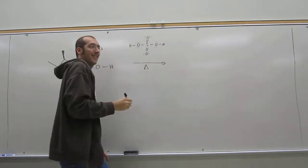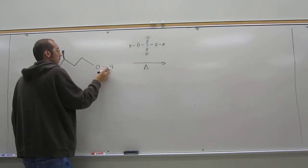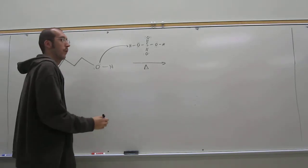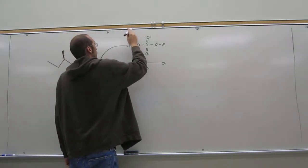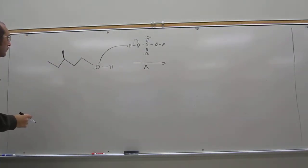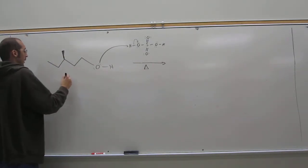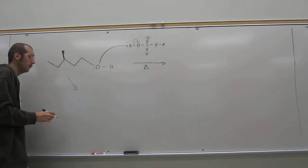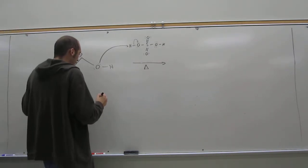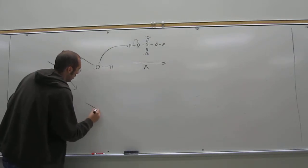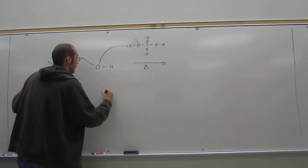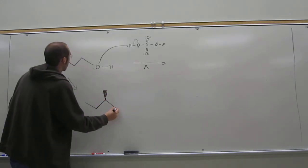Of course, this is an acid, right? So what's going to happen is these electrons are going to remove that proton there. All right, that's going to give you the positively charged alcohol. Of course, the stereochemistry doesn't do this there.